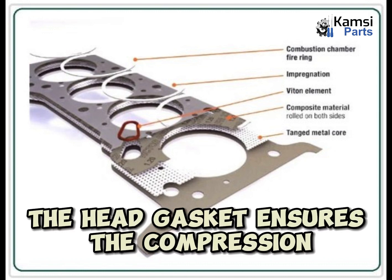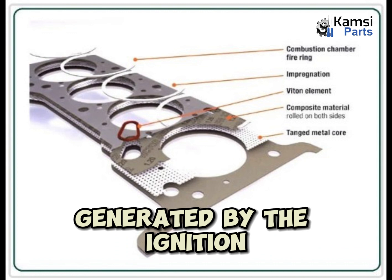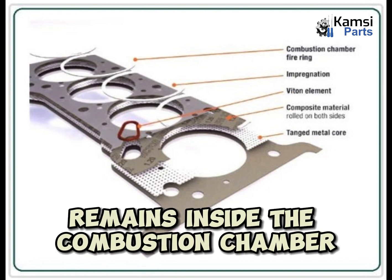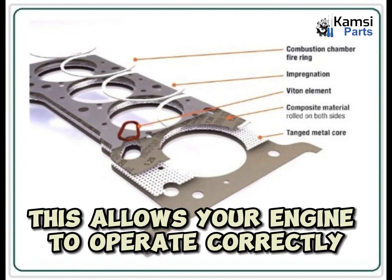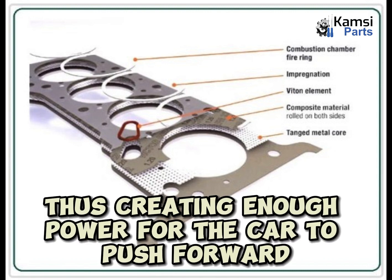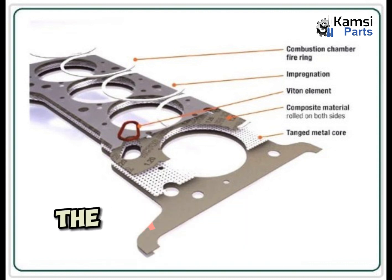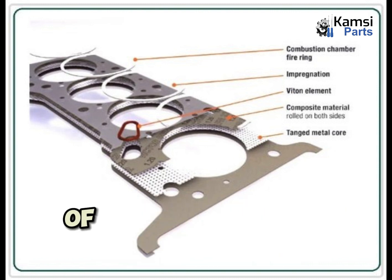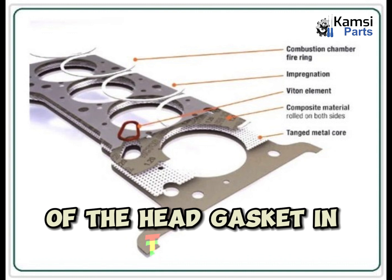The head gasket ensures the compression generated by the ignition of the air-fuel mixture remains inside the combustion chamber. This allows your engine to operate correctly, thus creating enough power for the car to push forward. Here is a detailed list of the functions of the head gasket in the car.